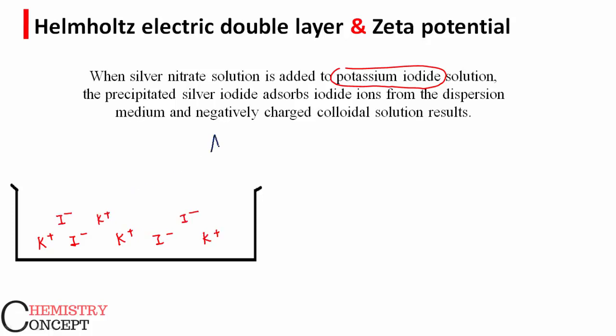Now into this solution I add silver nitrate solution drop wise. So when I add a single drop of AgNO3, it will go into solution and dissociate into Ag positive ions and NO3 negative ions.